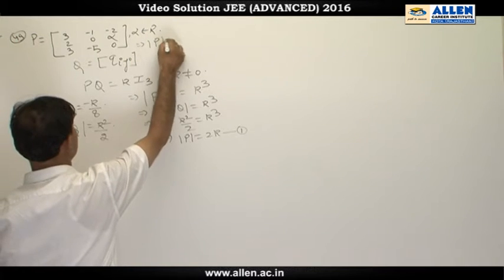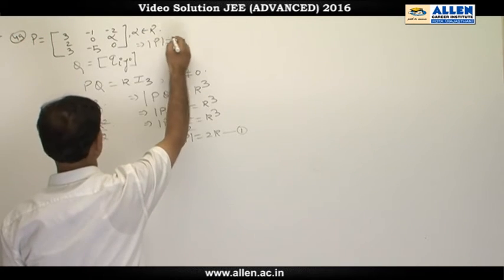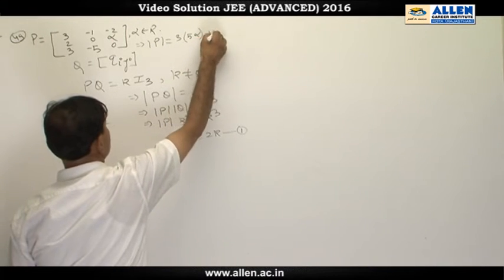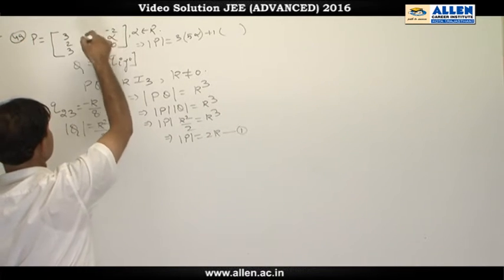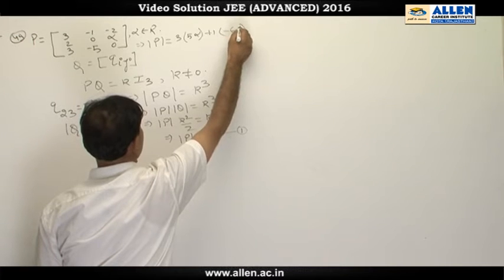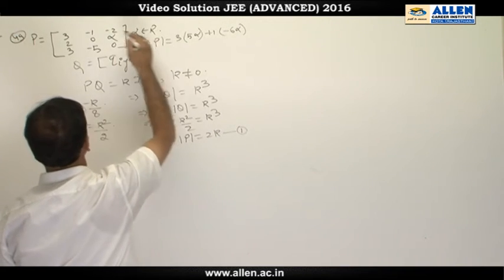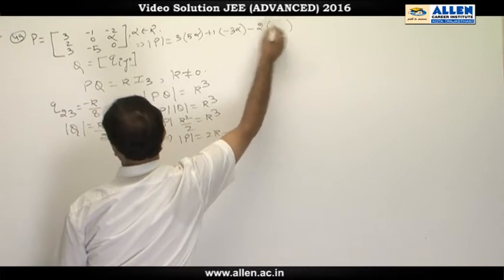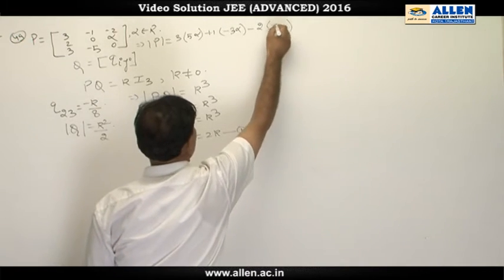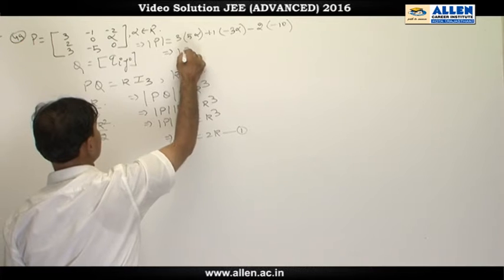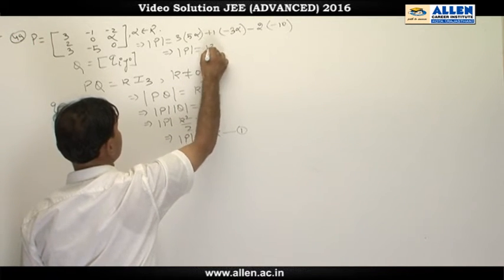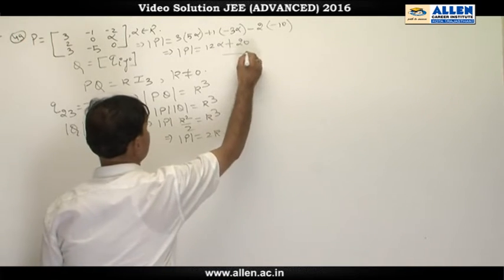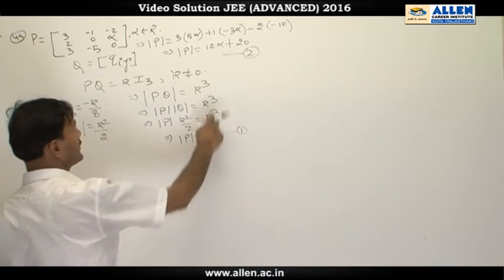Now we find det(P) a second way by expanding along the first row. We get: 3 times (5α + 1) minus (−1) times (−6α − 3α) minus 2 times (−10), which simplifies to 15α + 3 minus 12α plus 20, giving det(P) = 12α + 20.